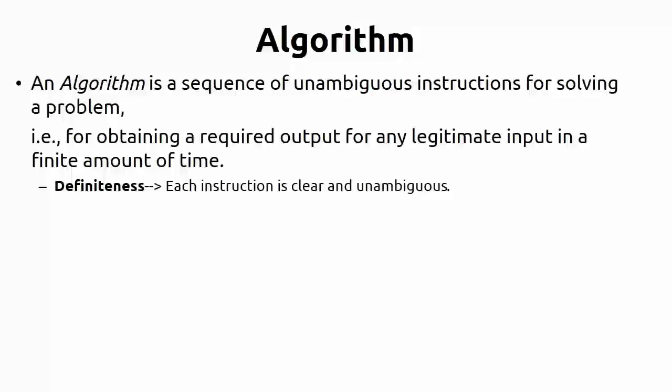These five things are called the typical requirements or properties of an algorithm — for obtaining a required output for any legitimate input in a finite amount of time. The first property is definiteness. Definiteness means each instruction is clear and unambiguous. As stated in the definition, the instructions must be unambiguous.